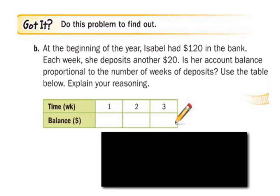At the beginning of the school year, Isabel had 120 bucks in the bank. Each week she deposits another 20 bucks. Is her account balance proportional to the number of weeks of deposits? Here's the table below. So there's not a fee or anything like that on this one, but is there a starting value? Yeah, so is this one proportional? No, it is not. Let's look at the table just to make sure. So if she has 120 bucks, after one week she deposits 20, so how much does she have in the account? 140. After two weeks, well, she put in another 20 bucks, so that's 160, and she put in another 20 bucks. After three weeks, 180.